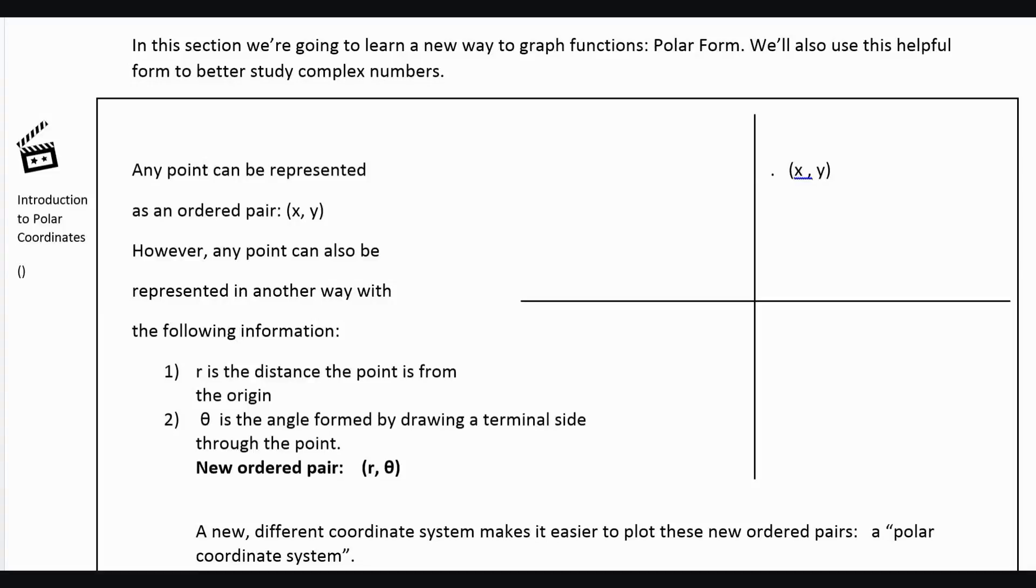Okay, we're actually going to learn a new way of graphing, and this new way of graphing is called polar form, or polar coordinates. Now, the way that you've learned to graph before, you've been taught to graph everything as an X, which is how far you go over horizontally, and then a Y,